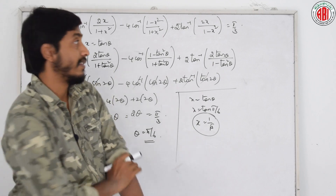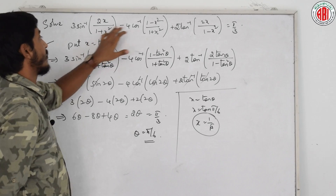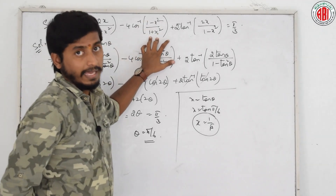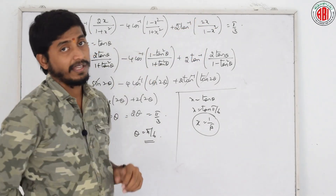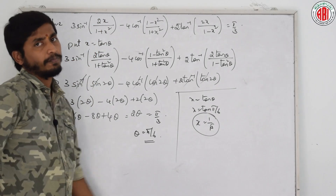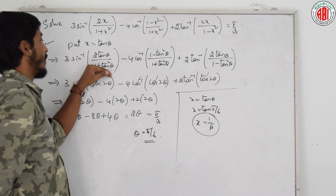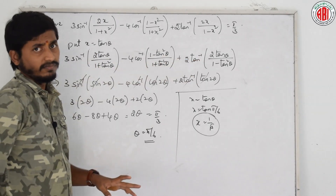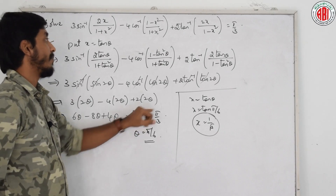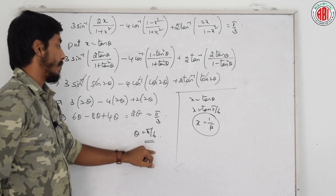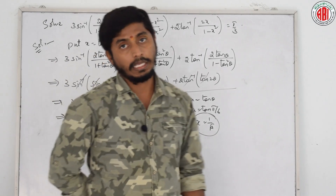To recap: we were asked to solve 3 sin inverse 2x by 1 plus x square minus 4 cos inverse 1 minus x square by 1 plus x square plus 2 tan inverse 2x by 1 minus x square equals pi by 3. We substituted x equals tan theta, which converted the expressions to sin 2 theta, cos 2 theta, and tan 2 theta respectively. After the inverse functions cancelled, we simplified to 2 theta equals pi by 3, giving theta equals pi by 6, and therefore x equals 1 by root 3.